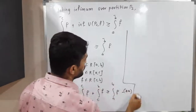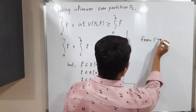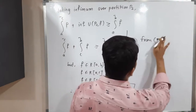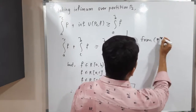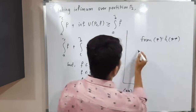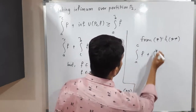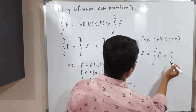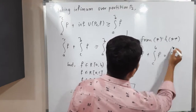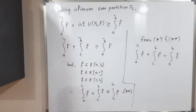From (★) and (★★) we conclude that ∫[a,c] f + ∫[c,b] f = ∫[a,b] f. In this way we have proved the second part as well. Thank you, bye bye.